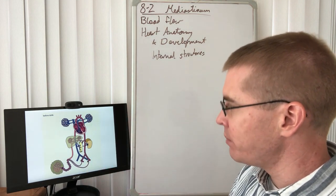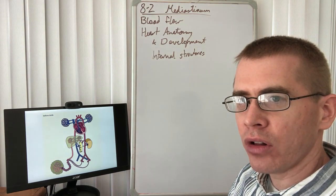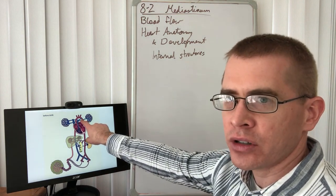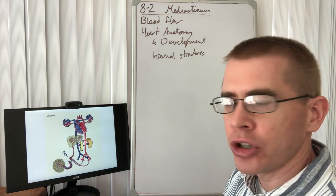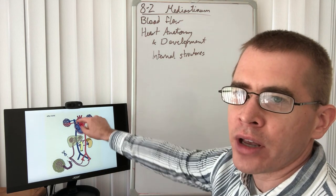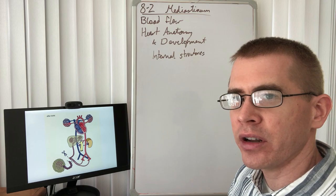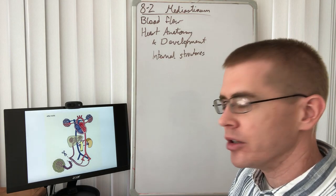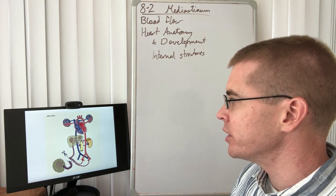So ductus arteriosus, going back to look at the adult, so focus on that ductus arteriosus right now. I'm going to go back to the adult. Well, that degenerates, closes off, and becomes ligamentum arteriosum in the adult after birth. And this blood flow pattern has changed.